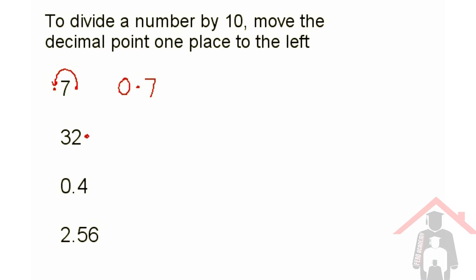The decimal point is here, and when I move it one place to the left, it lands in between the 3 and the 2. So my answer is 3.2. Move the decimal point one place to the left and it's here, so we have 0.04. But once again, we need to put a zero in front of the point.